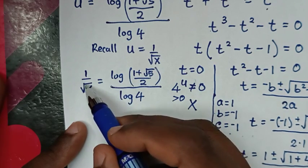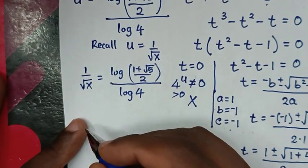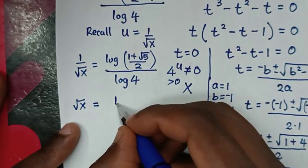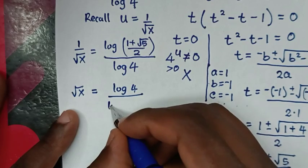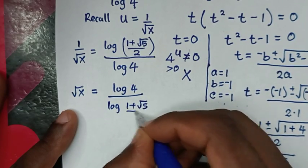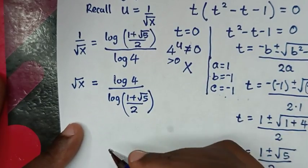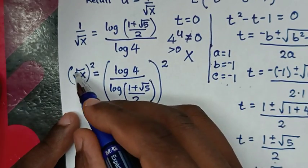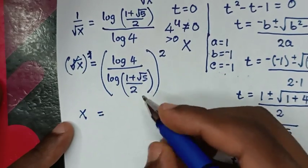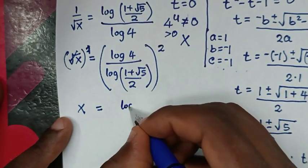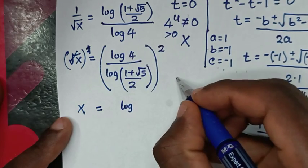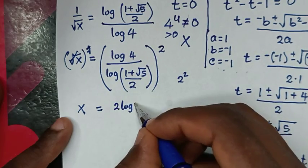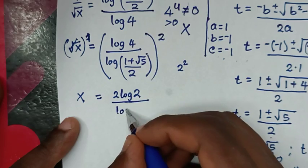We take the reciprocal of both sides, so square root of x equals log 4 over log of (1 plus square root of 5 over 2). To find x, we square both sides. Since log 4 equals log of 2 squared equals 2 log 2, it becomes x equals (2 log 2 over log of (1 plus square root of 5 over 2)) squared.